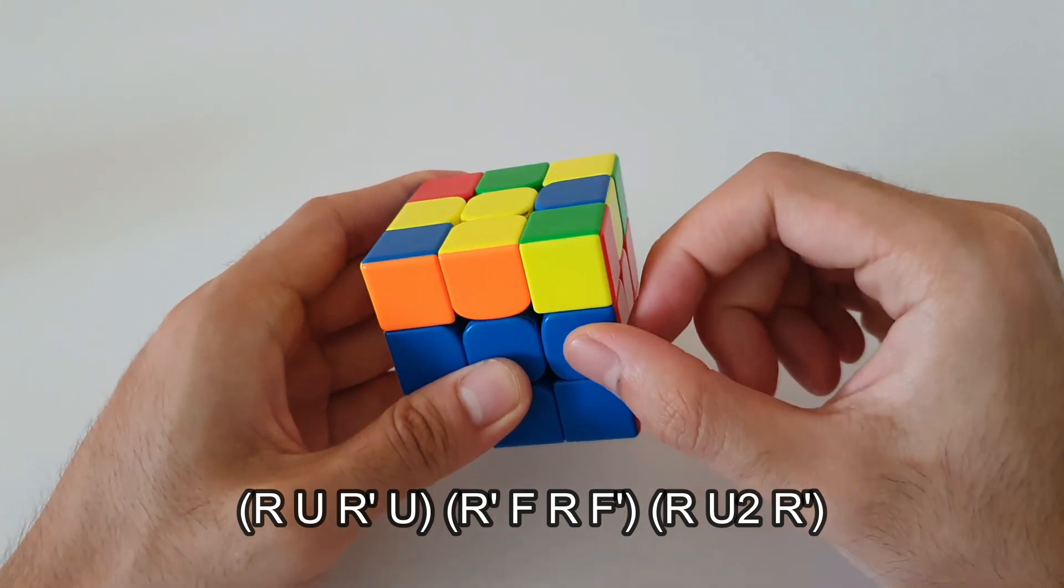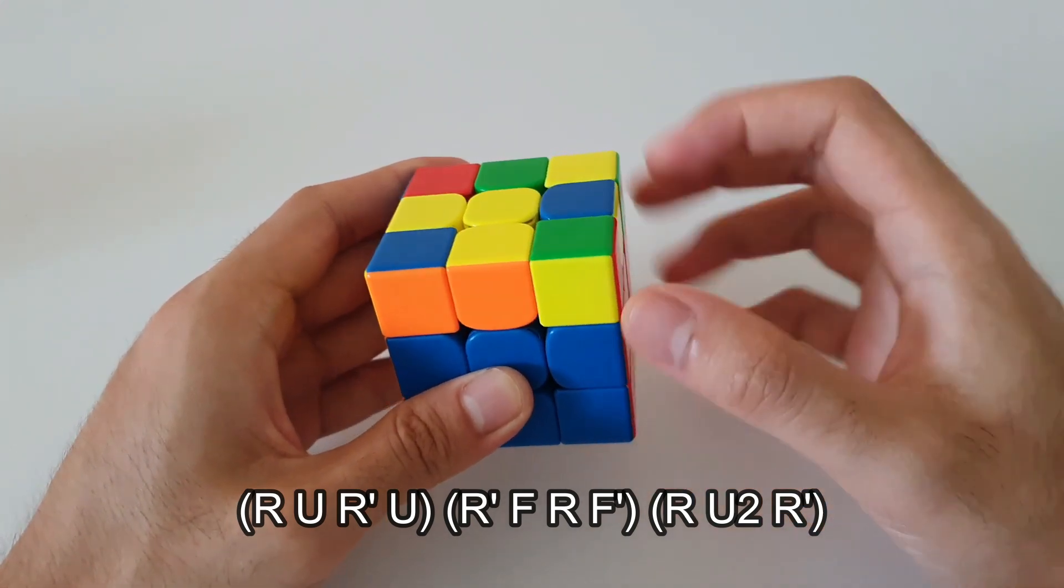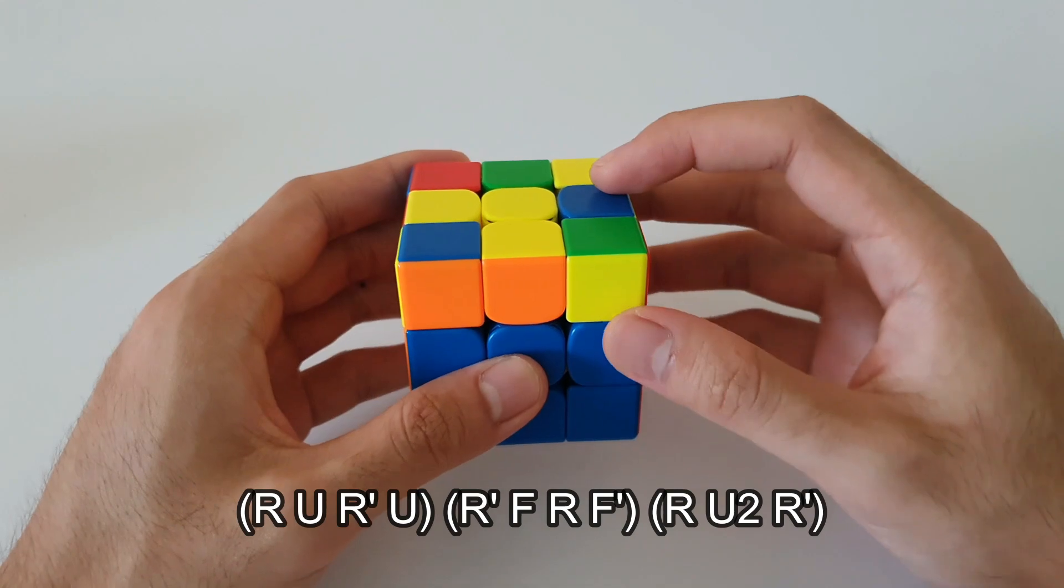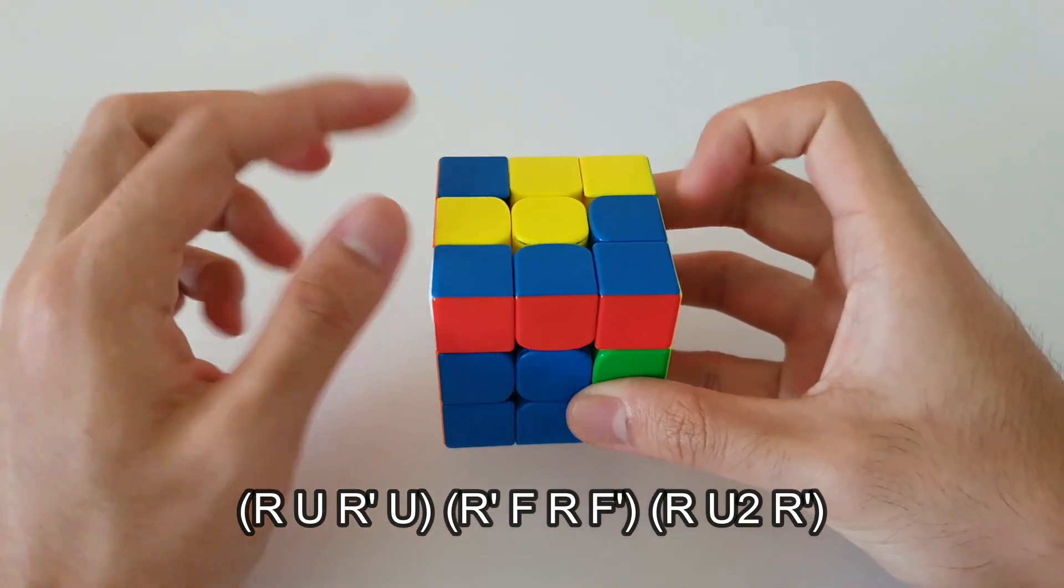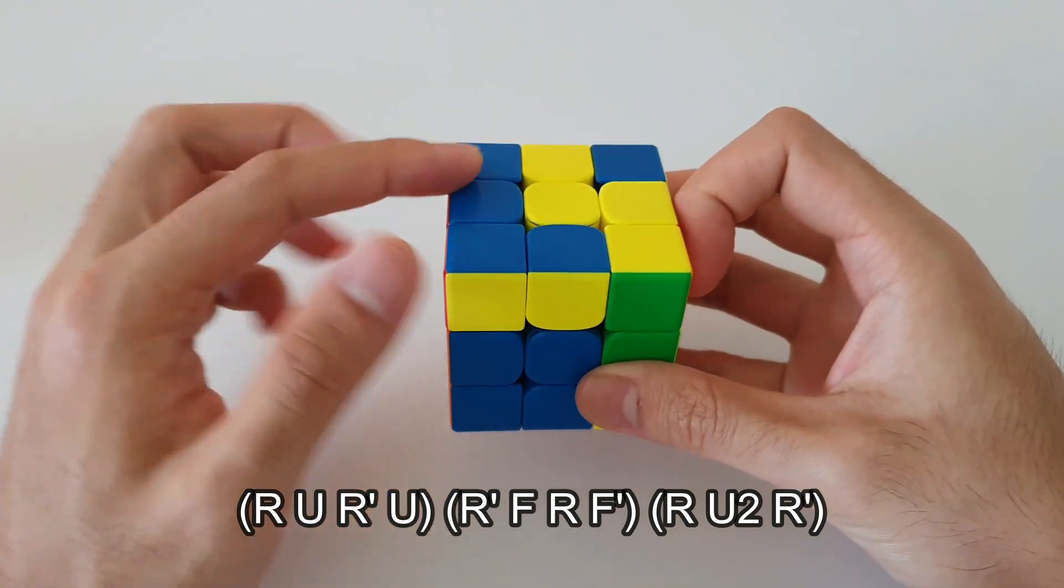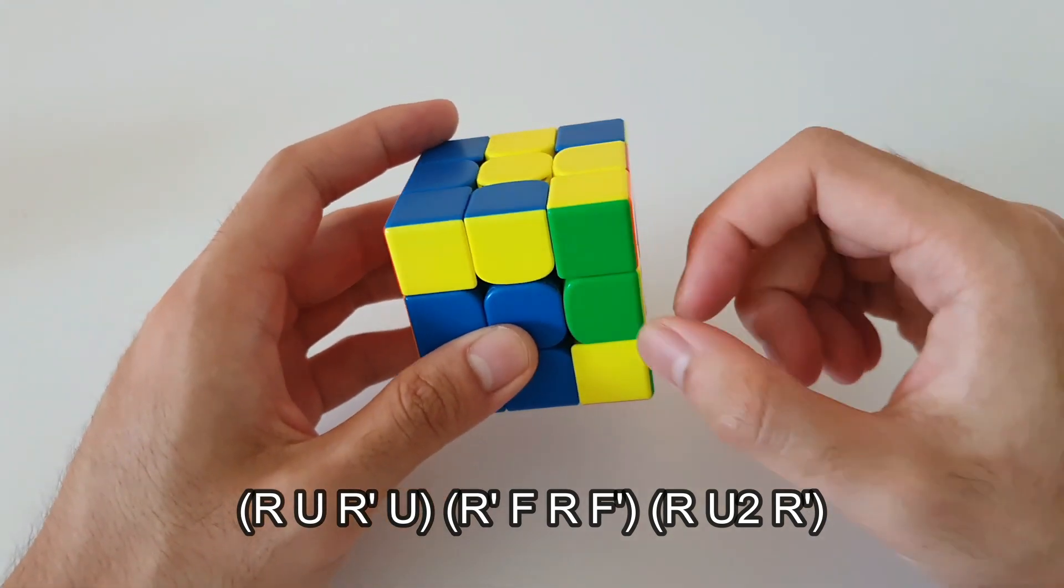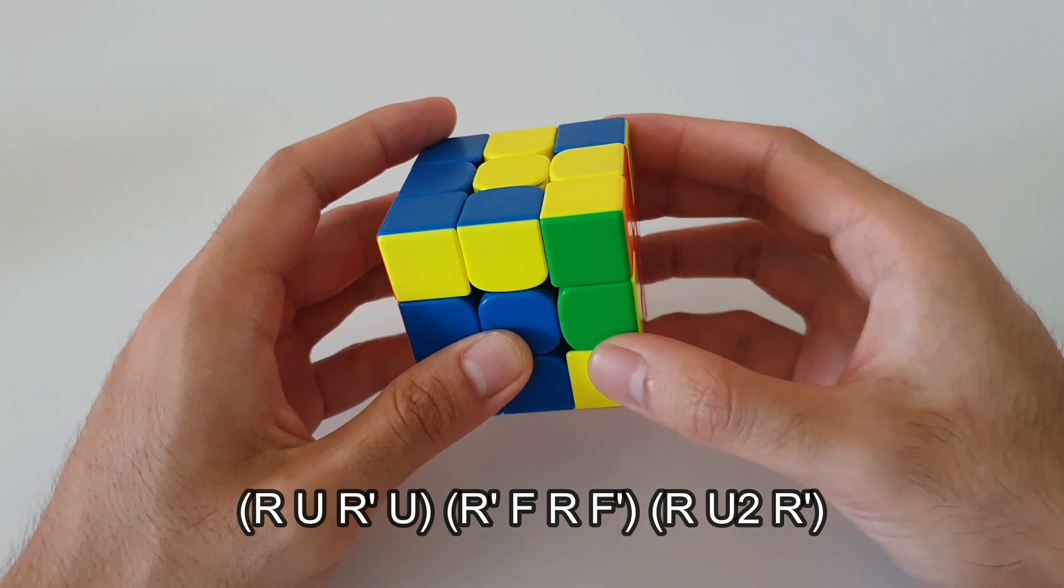So for this algorithm, I like to focus on this F2L pair on the front right corner. So you want to start off by taking this F2L pair out like this and moving it into the back position here. Now you want to do a sledgehammer on this corner, on the right side, like this.